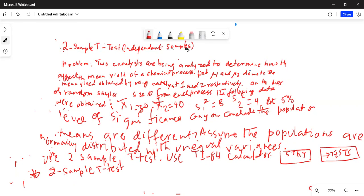We entered the data: x1 bar is 30, sx1 is square root of 3 so it's 1.732, n1 is 10, x2 bar is 40, sx2 square root of 4 which is 2, n2 is 10.